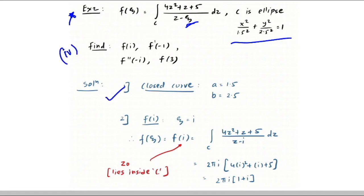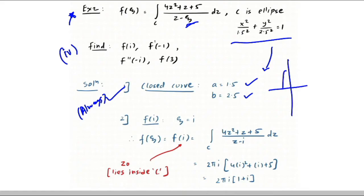Always begin by understanding the closed curve. Since the equation is in standard ellipse form, a = 1.5 and b = 2.5. Because b > a, the ellipse is taller than it is wide, extending 2.5 units vertically and 1.5 units horizontally.